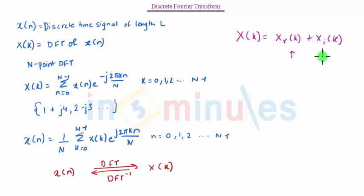So basically these two terms are useful for plotting magnitude and phase spectrum. So the magnitude spectrum can be generated as |X(k)| equals root of X_r(k) squared plus X_i(k) squared.